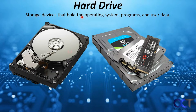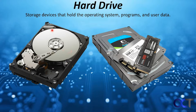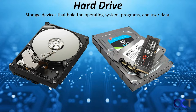Hard drives are storage devices that hold the operating system, programs, and user data. You install Windows, for example, on the hard drive, along with your programs, and your files are kept there too. On the left we have a spinning disk hard drive with the platters inside — this is exposed; normally it'll have a cover on it. These spin at a high rate of speed — 5400 or 7200 revolutions per minute — and a read/write head reads and writes data to the platters. In the back you have SATA connections for the motherboard and for power.